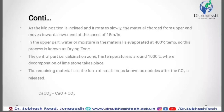In the upper part of the kiln, the moisture in the material is evaporated at 400 degrees Celsius temperature. This process is known as the drying zone. In the drying zone, the temperature is 400 degrees Celsius, where vapor or moisture in the material is evaporated. The central part of the kiln is the calcination zone, where the temperature is around 1000 degrees Celsius and decomposition of limestone takes place. In decomposition, the remaining material is in the form of small lumps known as nodules, after CO₂ is released.